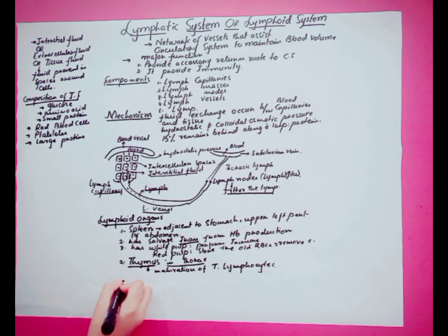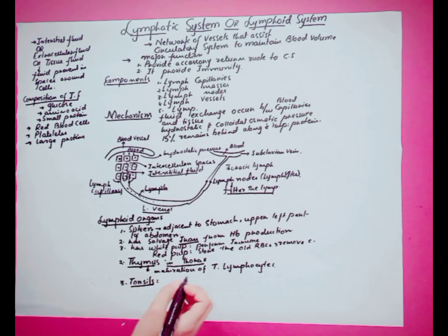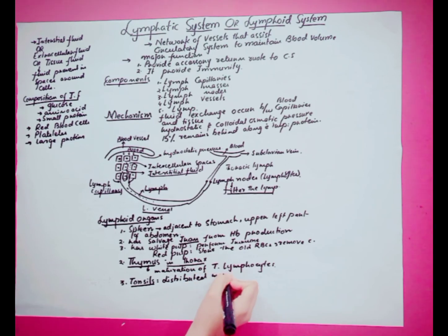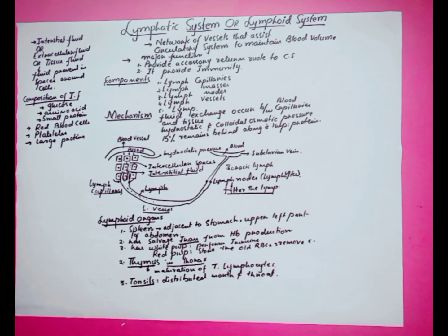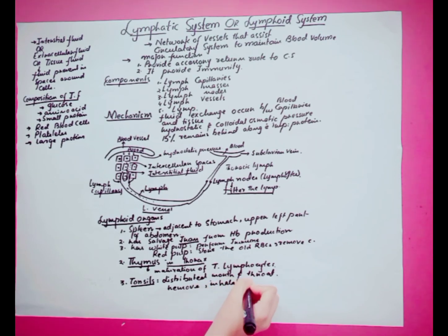Our next lymphoid organ is the tonsils. These are present in the oral cavity and are distributed around the mouth and throat. The function of tonsils is to remove pathogens which may enter through inhalation or ingestion.